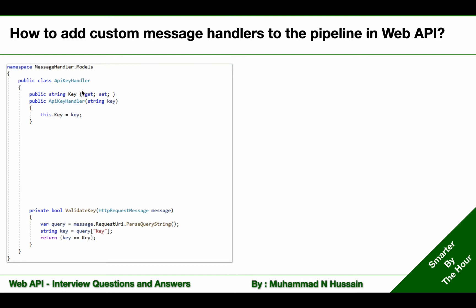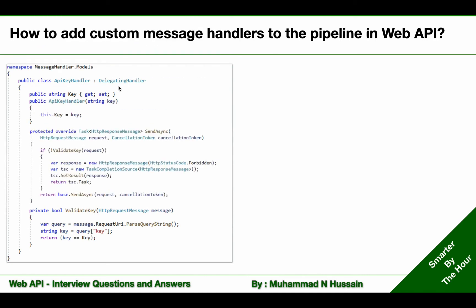After creating the class, we need to derive it from the DelegatingHandler class and override a method available in DelegatingHandler. The method is named SendAsync. In the implementation, what we are doing is getting that request and passing it to our ValidateKey method.